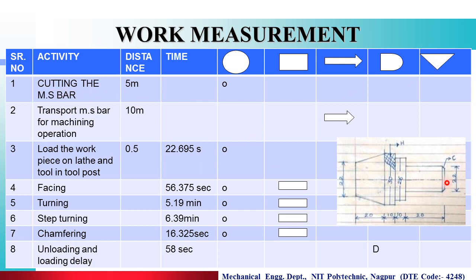The first operation in this job is cutting the MS bar. Since we are cutting the MS bar, this is classified as an operation, and that is why I have the symbol of operation here.